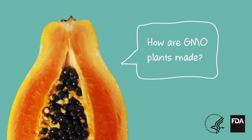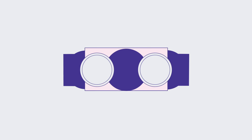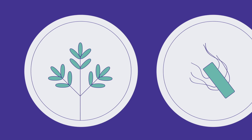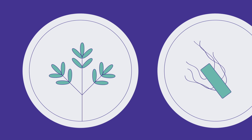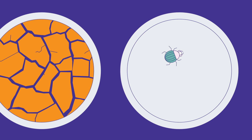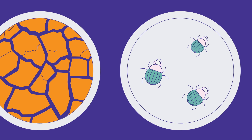How are GMO plants made? First, scientists look for a desired trait in a plant, animal, or even bacteria. It could be a trait like resistance to drought, insects, or viruses.